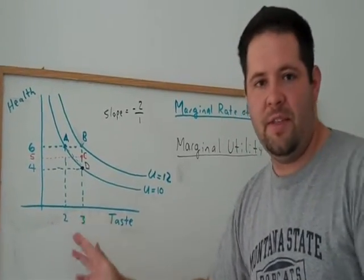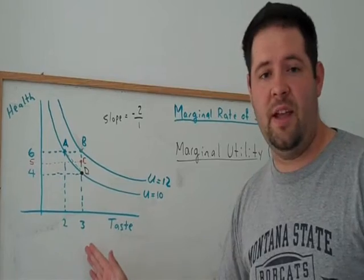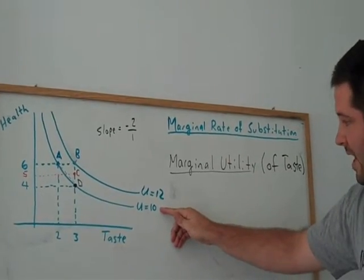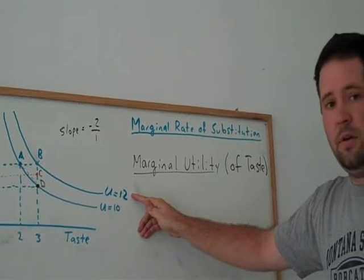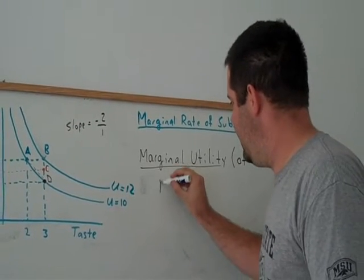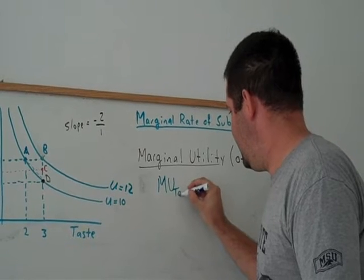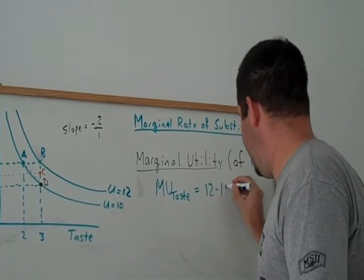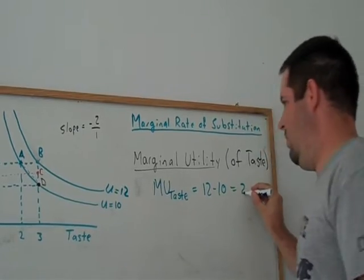Therefore, we can think about what the marginal utility of taste is at A. Because at A, if I give this consumer one more unit of taste, how much more utility does he have? Well, he goes from 10 to 12. And the marginal utility, we'll abbreviate that MU of taste, will equal 12 minus 10. That will equal 2.